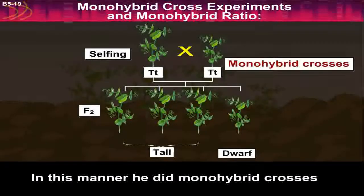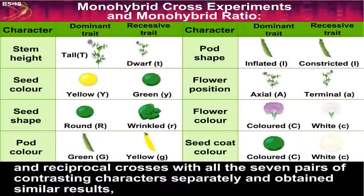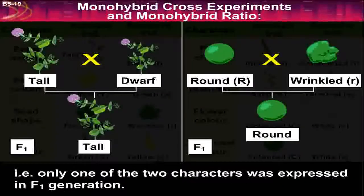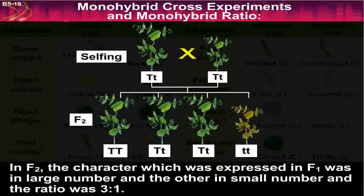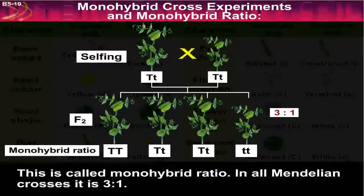In this manner, he did monohybrid crosses and reciprocal crosses with all 7 pairs of contrasting characters separately and obtained similar results — that is, only one of the two characters was expressed in the F1 generation. In F2, the character expressed in F1 appeared in large numbers and the other in small numbers, in a ratio of 3:1. This is called the monohybrid ratio.